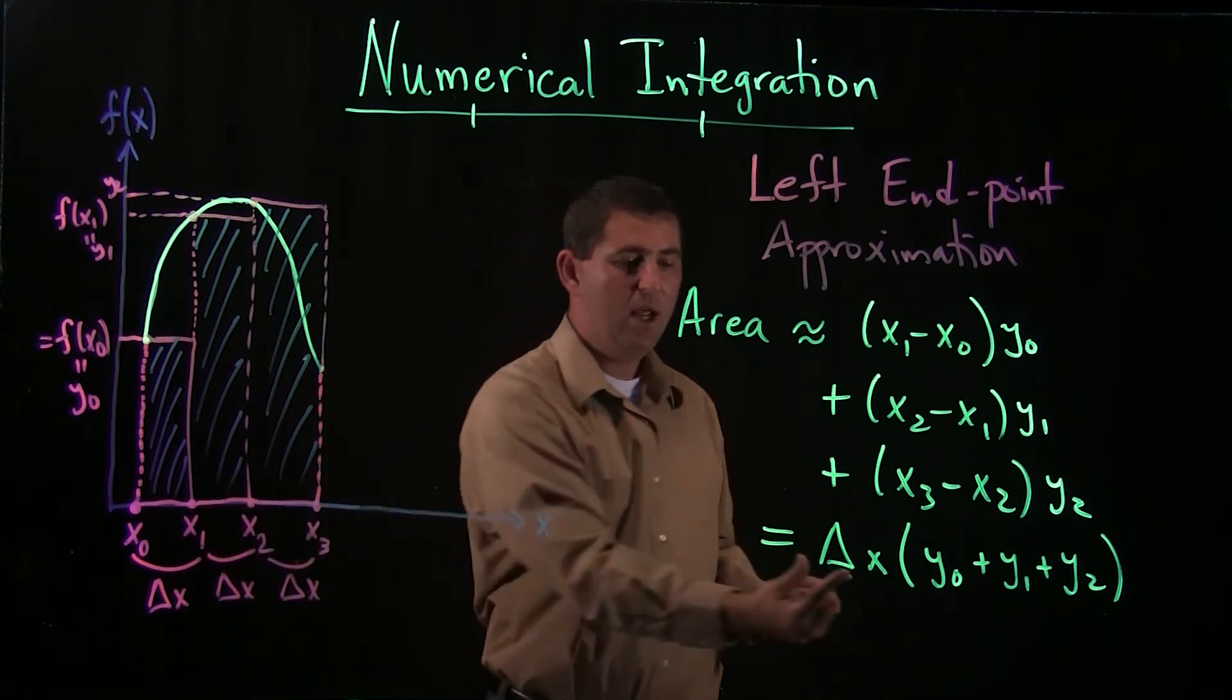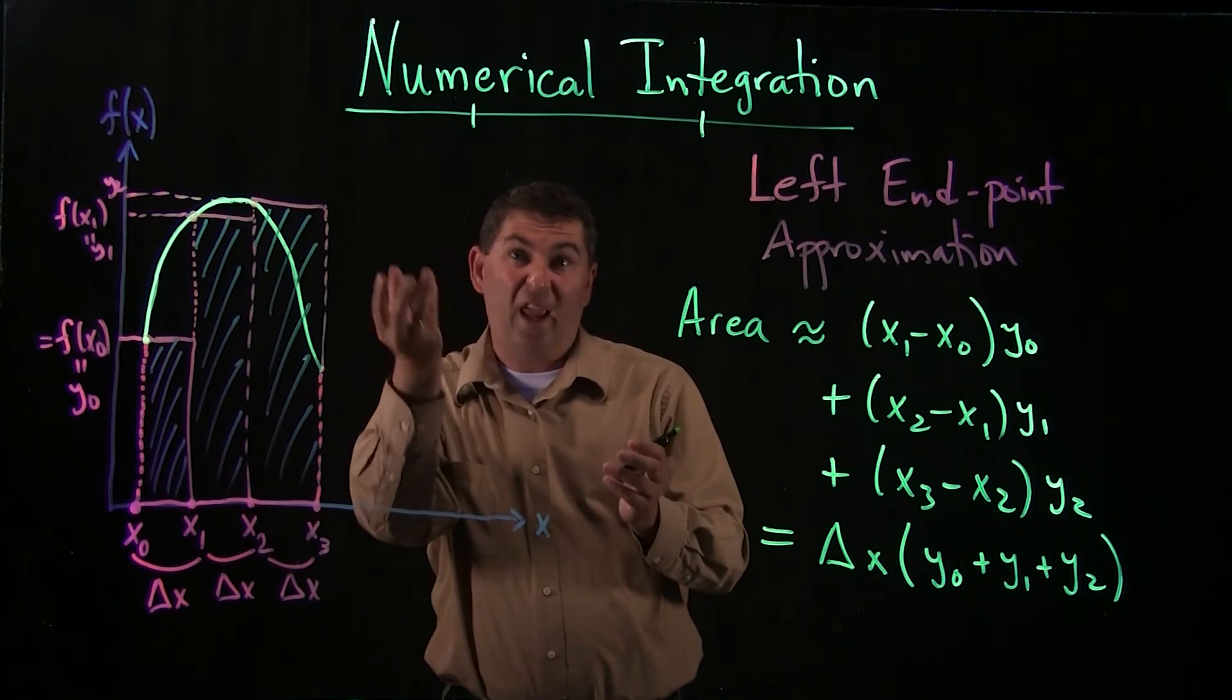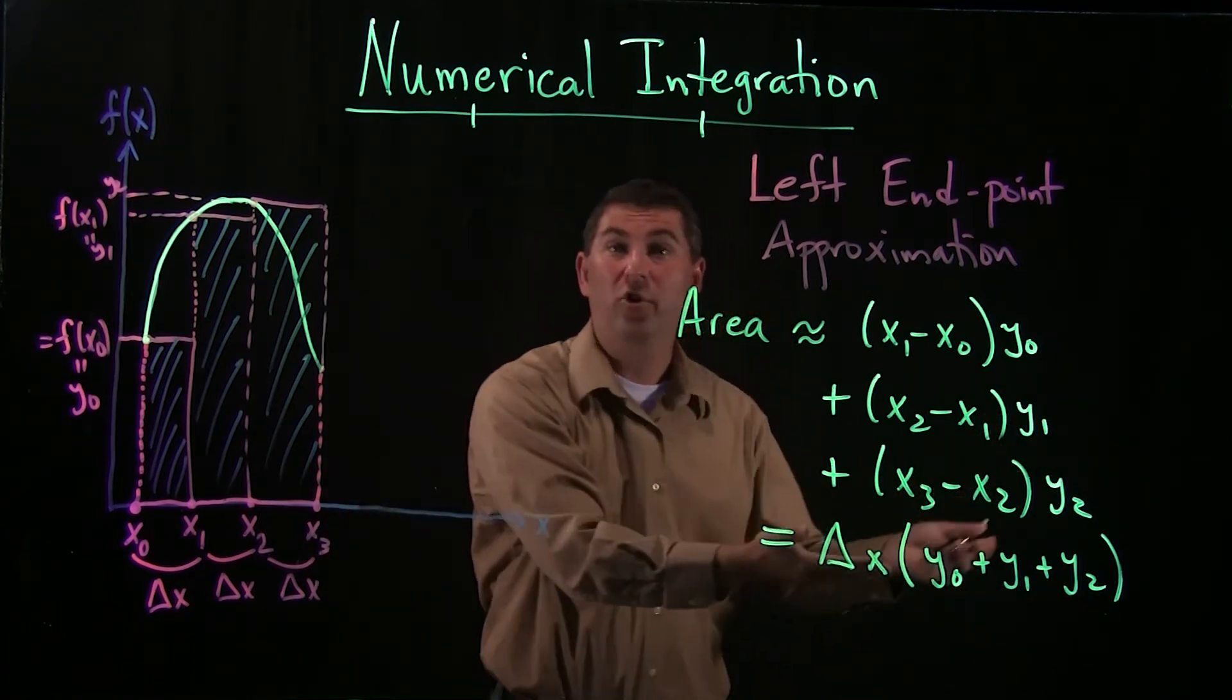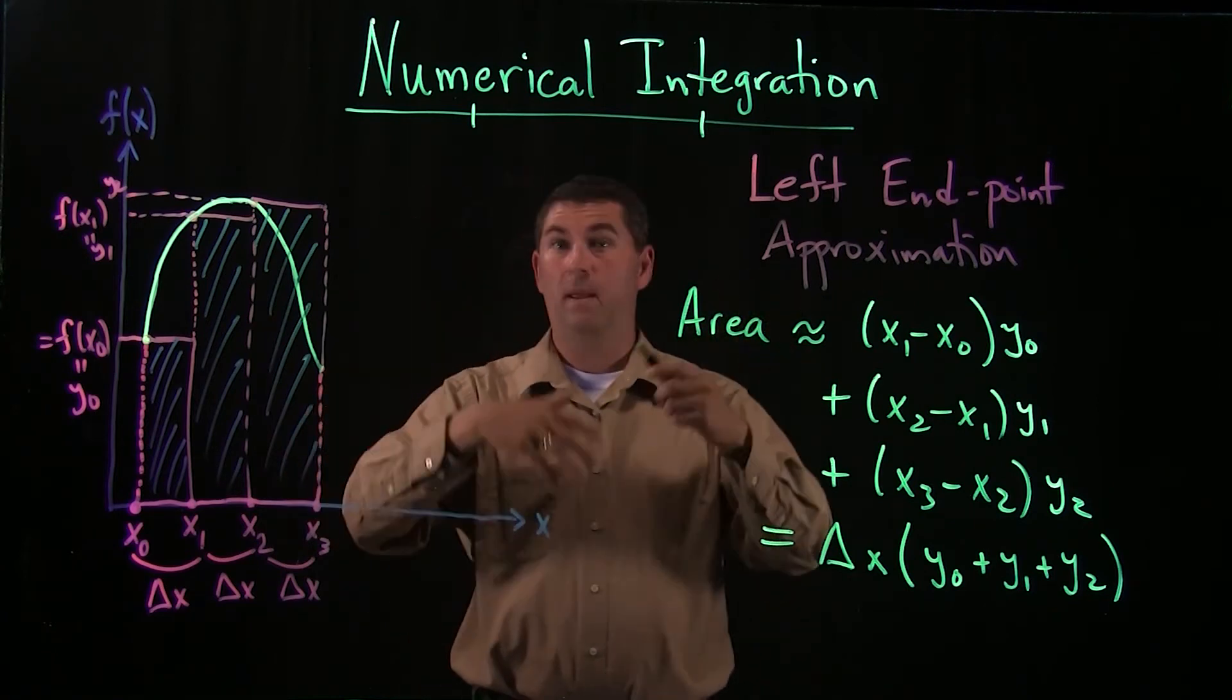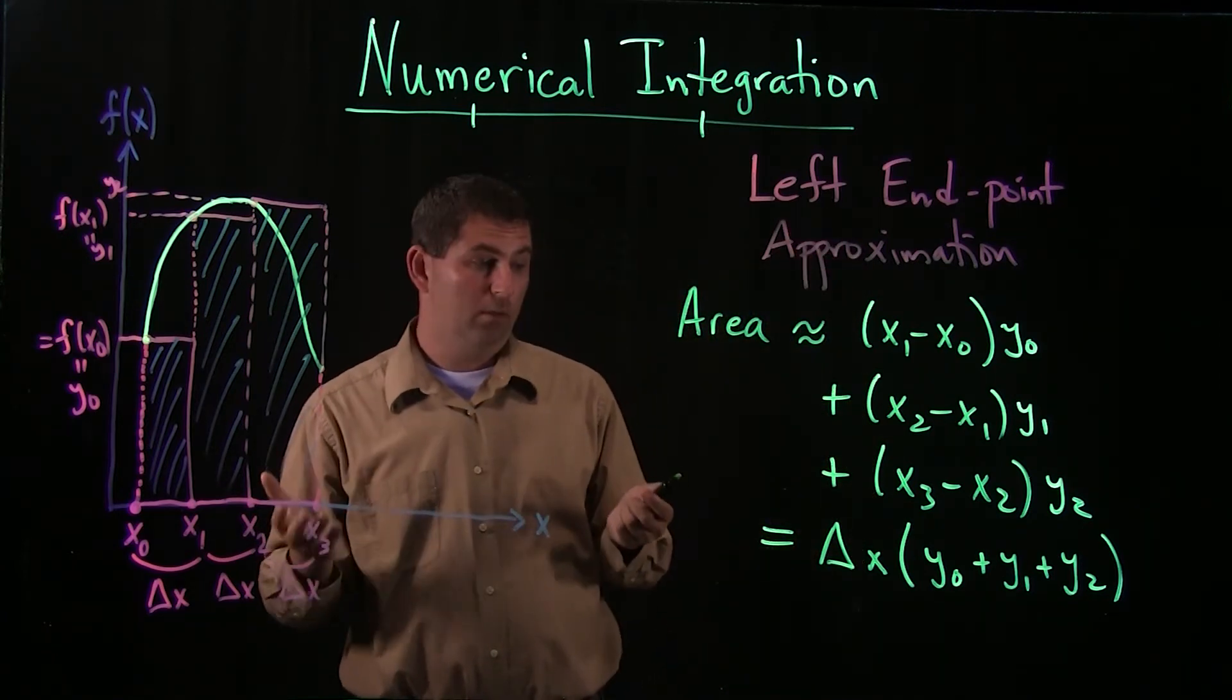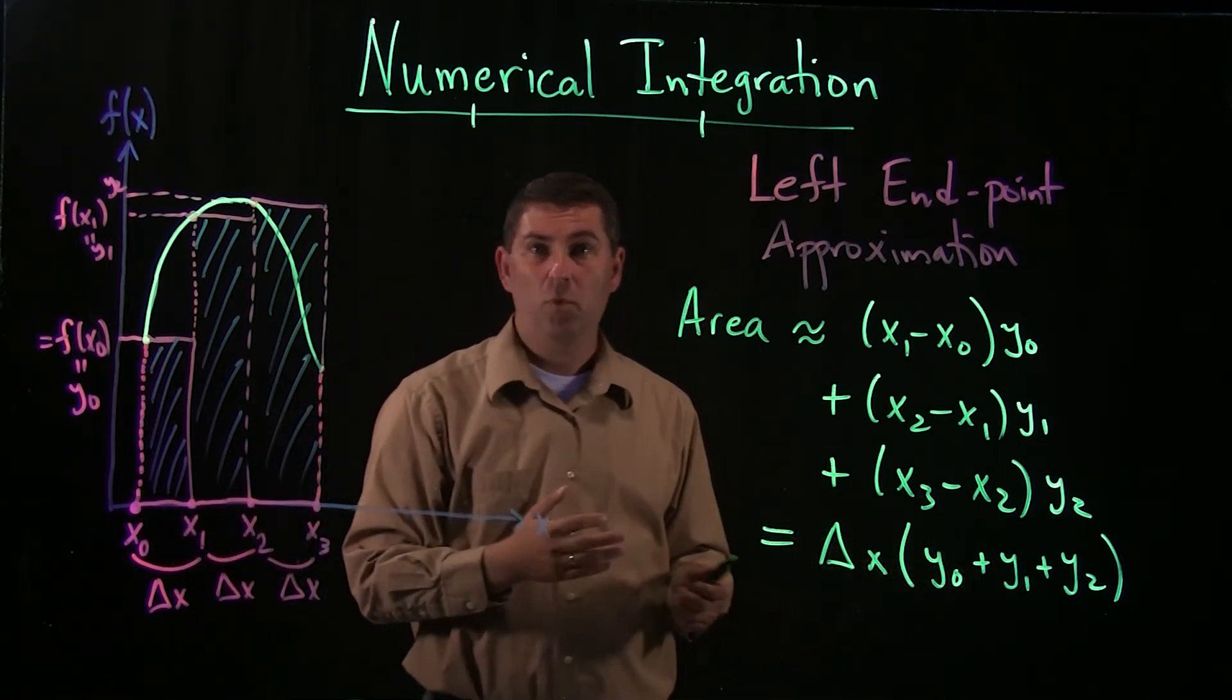Of course, if I had more intervals, the delta x, well, it will change, but it'll just scale down. And this will change, but just adding more terms, y0 plus y1 plus y2, maybe plus y3 plus y4 plus y5, however many partitions we get, however many intervals here, that's how many y's we'll get.